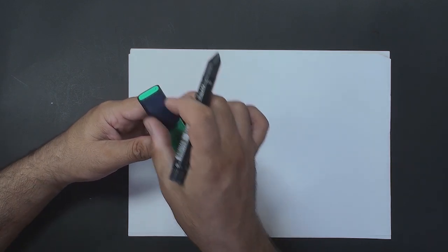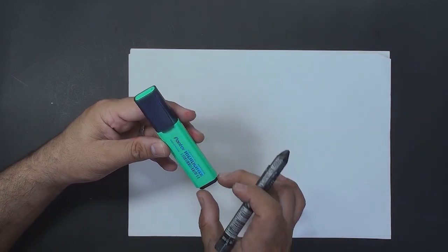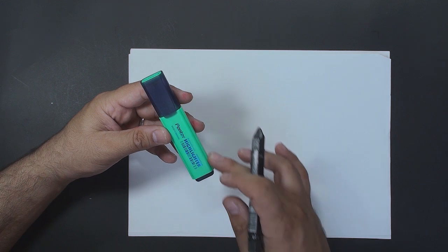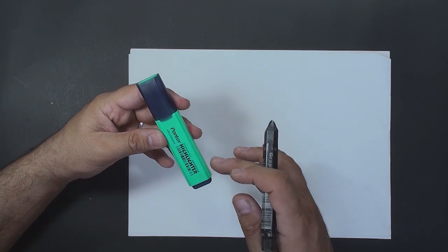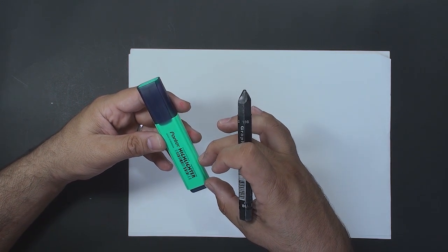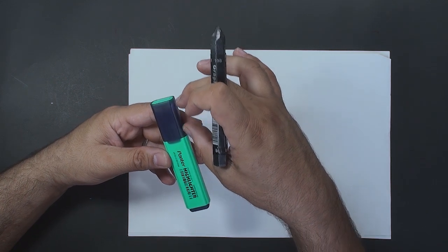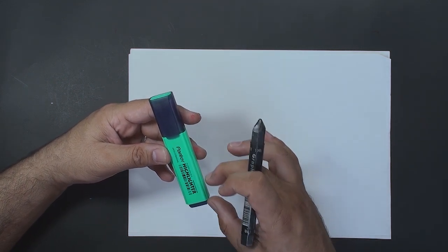The first object is a marker. We need to know the dimensions and proportions of this marker. Note that the length of this marker is approximately 4 to 5 times its width.